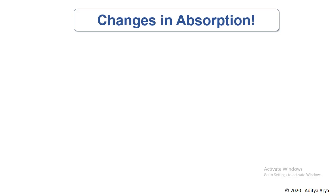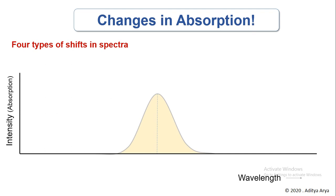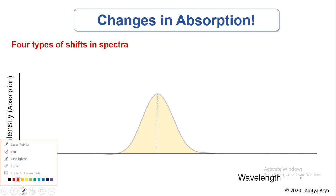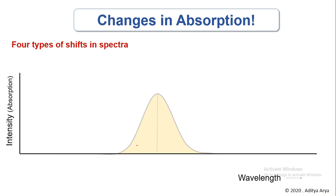Hello everyone. In this video we are going to look at changes in absorption phenomena which occur during different conditions. We have already seen that a typical absorption spectra of any molecule, whether it is a biomolecule or a chemical entity, can be represented by a graph where the top part represents the highest absorption, and the wavelength at which it shows the highest absorption is known as the lambda max of that molecule.